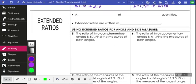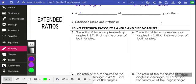Now into extended ratio, still a ratio, but it's a comparison of 3 or more quantities. So it is a ratio, but it's an expanded ratio, so it's extended. They're often written like A to B to C. So you're comparing a lot more things in this case. An example that we can work on: the ratio of 2 complementary angles. Complementary means they're going to add to 90 degrees. Angles 3 to 7. Find the measures of both angles.